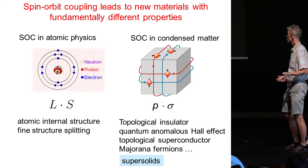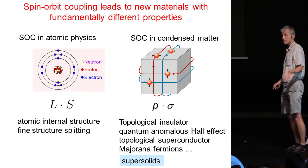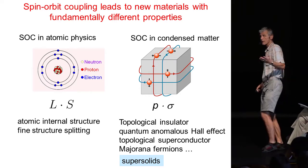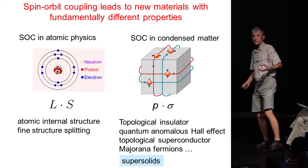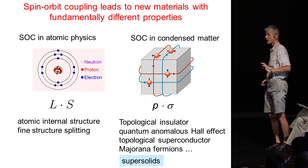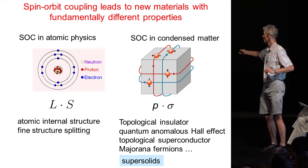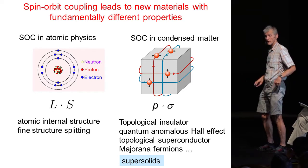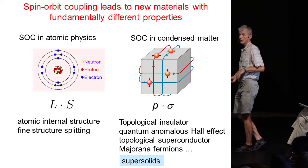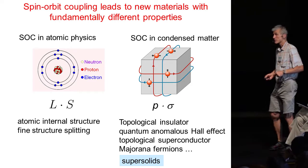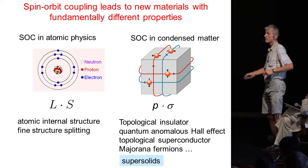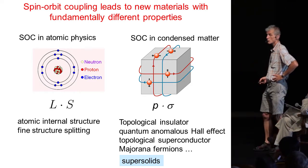But the coupling of spin and orbital motion also happens in condensed matter systems. Spin-orbit coupling is often the term in the Hamiltonian which gives rise to special properties of topological insulators, Majorana fermions and such. And as we have recently shown, spin-orbit coupling can also give rise to super solids.